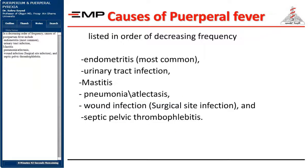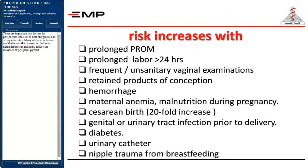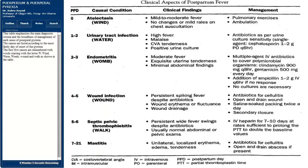In decreasing order of frequency, causes of postpartum fever include: endometritis (most common), urinary tract infection, mastitis, pneumonia/atelectasis, wound infection (surgical site infection), and septic pelvic thrombophlebitis. The first five causes are remembered with words starting with the letter W: wind, water, womb, wound, and walk, as shown in the table. The causes are listed according to the most likely day of onset of the pyrexia. Many risk factors for postpartum infection are modifiable and their correction before or during labor can markedly reduce the incidence of puerperal pyrexia.